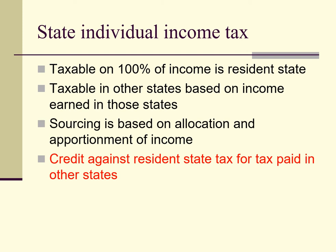To prevent the same income from being taxed in more than one state — for individuals but not corporations — states use a system of credits. In most, but not all, cases, a resident state will give its resident individuals credit against state income tax for the tax paid in other states. In other cases, a state will give non-residents a credit against tax otherwise payable on income sourced in the non-resident state if the income is taxed in the individual's state of residence. In still other situations, rare, there are no credits and income is, in fact, double-taxed.